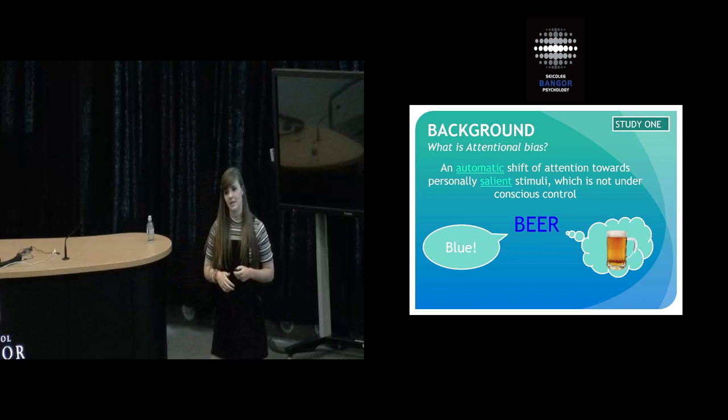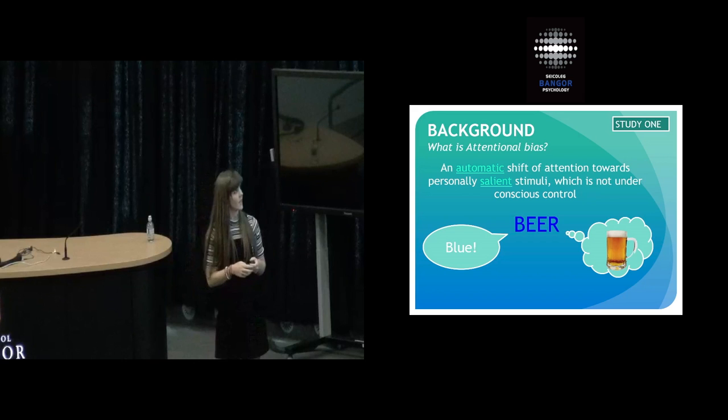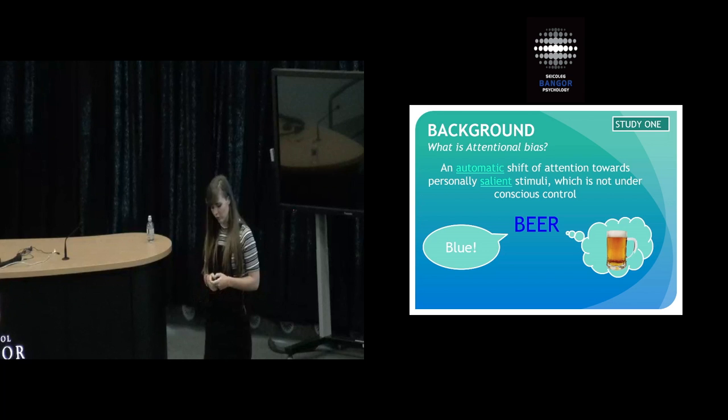The most commonly used measure of attentional bias is the alcohol Stroop task. Alcohol or neutral words appear on the screen, and what they have to do is try and ignore the meaning of the word and respond to the color of the word. So blue, but they might still be thinking about the beer. Individuals who have an alcohol dependency are slower to respond to alcohol-related words because it grabs their attention and directs them away from the task. Stroop interference is calculated by taking away neutral reaction time scores from alcohol reaction time scores, so each person acts as their own control.